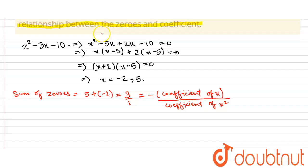Now for the second relation, let's look at the product. The product of zeros is 5 into minus 2, that is minus 10, and which is again equal to minus 10 by 1.